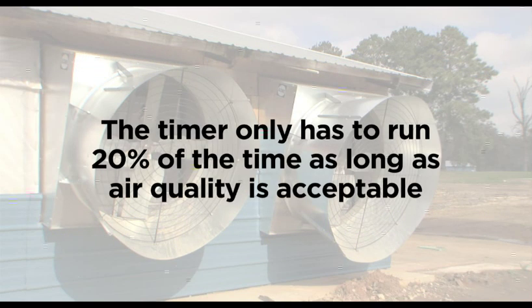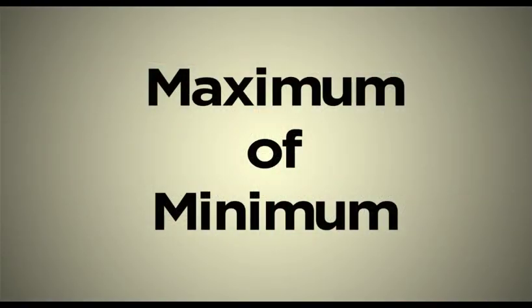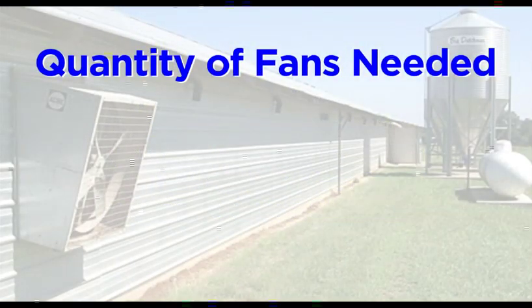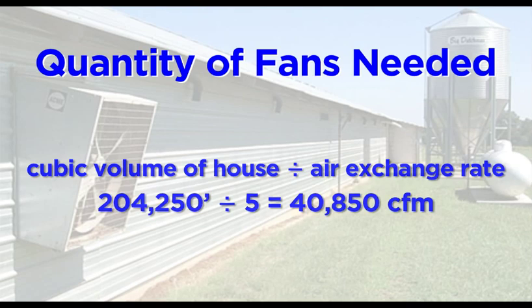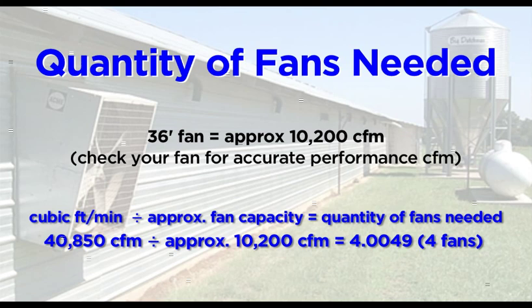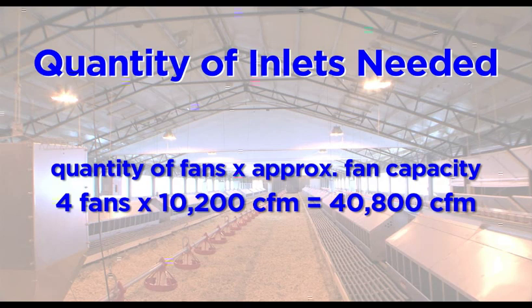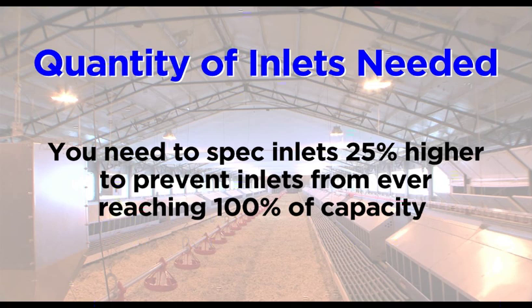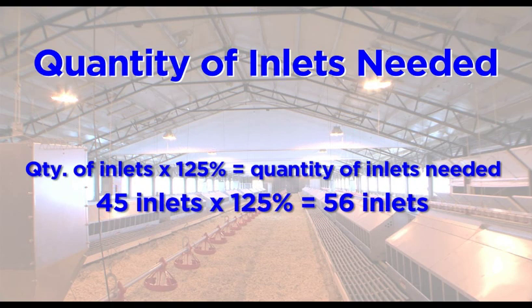The timer only has to run 20% of the time as long as air quality is acceptable. For the maximum of minimum ventilation, you will need fan volume that equals 1 air exchange every 5 minutes. To determine the number of fans needed, take the cubic volume of the house and divide by 5, then divide by the amount of air one minimum fan can displace — a 36-inch fan equals 10,200 CFM. Always round up or down to the nearest whole number. To determine the number of inlets needed, take the number of fans and multiply by the air displaced by one minimum fan in CFM, then divide by inlet volume in CFMs. Allow 900 CFM per inlet.